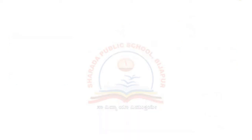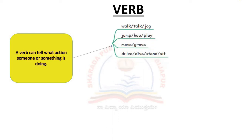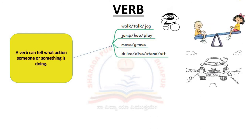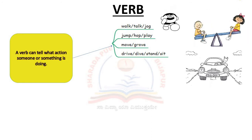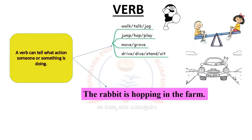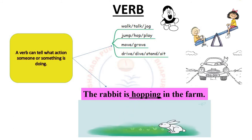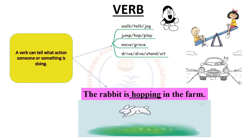Let's understand the next part of speech: verb. A verb can tell what action someone or something is doing. Let's look at these words: walk, talk, jog, jump, hop, play, move, groove, drive, dive, stand, sit. These are the actions that we do or see happening around us. Verbs always describe the action done by someone or something. For example: The rabbit is hopping in the farm. In this sentence, hopping is the verb — it is doing the action. This is how we identify a verb when we look at any action done by someone.